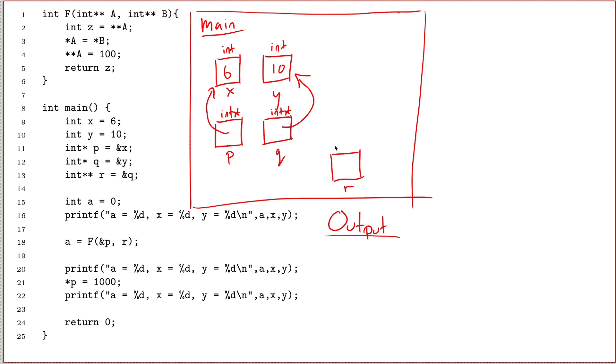Line 13 int star star r. So r is a pointer to a pointer to an int. And I try to assign it arrow pointing at q. So q is an int star. It is a pointer to int. If I create an arrow pointing at q, I add a star to the type. So q is an int star, so an arrow to q would be int star star, which means I can store that in r. So r contains this arrow pointing at q.